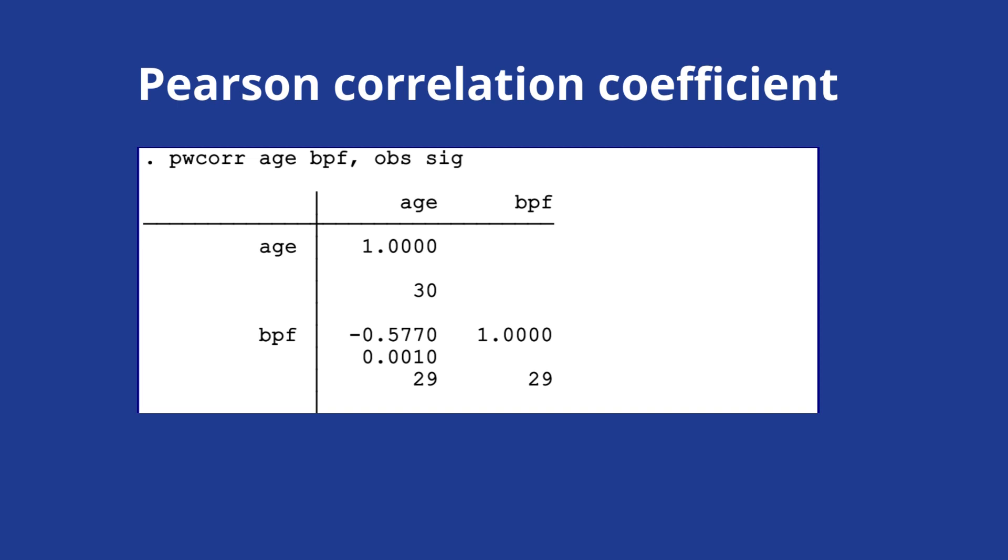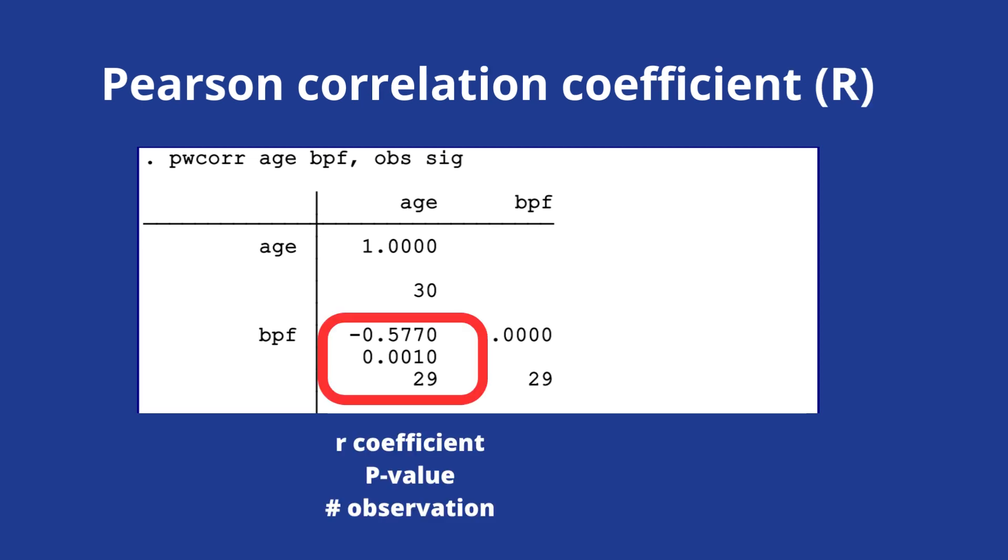So let's look at some Stata output like here. And you are going to be interested in this case in BPF and age. So you are going to have three rows. The first row is the R coefficient, which is the Pearson correlation coefficient. The second one is going to be the p-value. And the third one is going to be the number of observations.